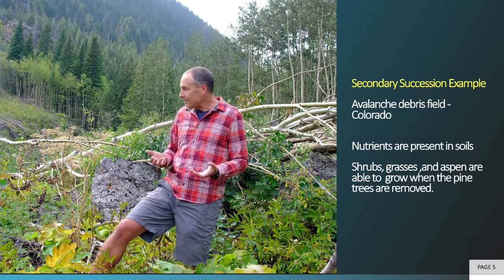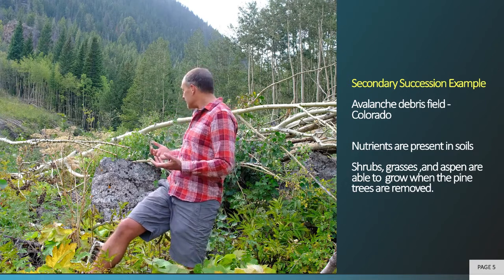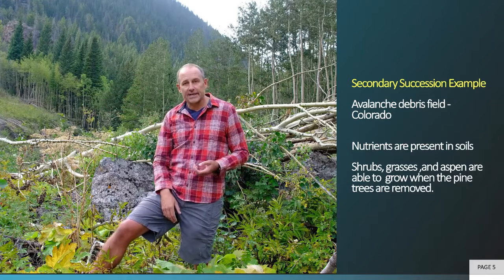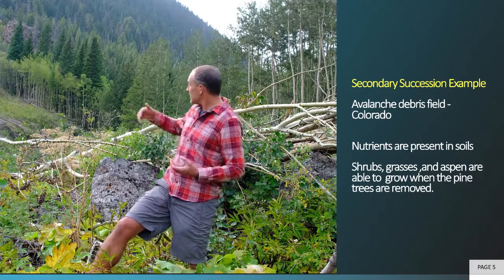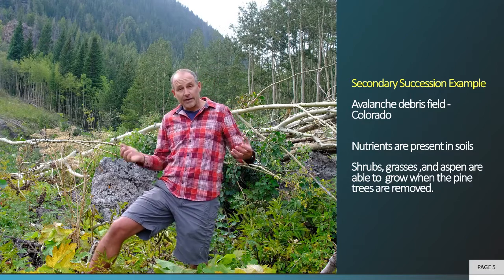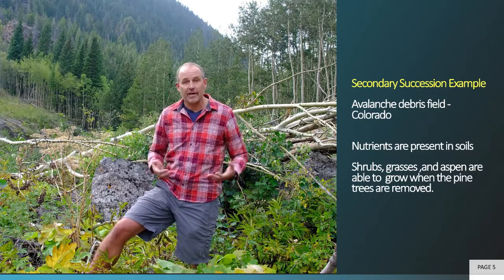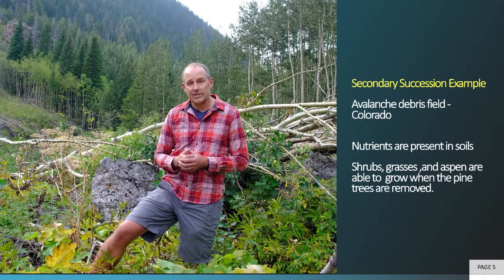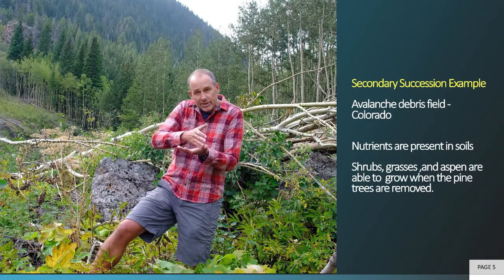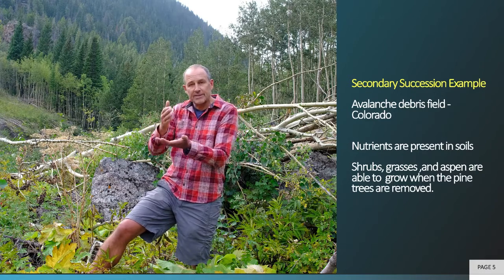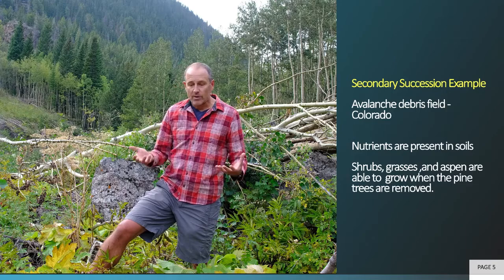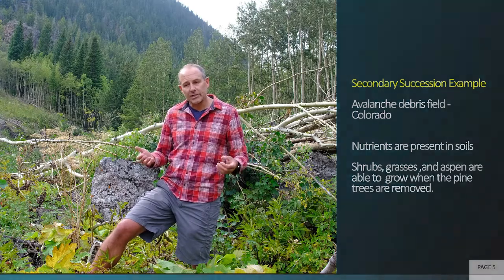Over time, you start to see other plants come in. Aspen are an early successional species. But then eventually, like what you see in the background, you'll get pine trees coming in if we don't have another avalanche at this site. And that sequence of early species replaced by the next species, replaced by the next, is what we mean when we talk about succession.